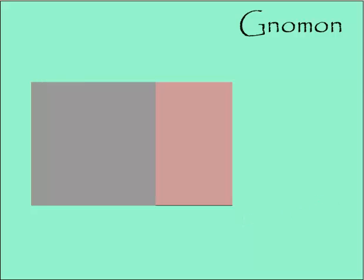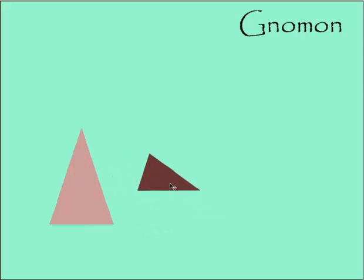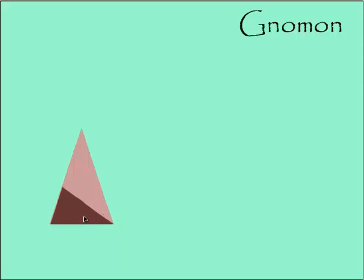So golden rectangles are the only ones that have a square that is gnomon to them. This is an equilateral triangle, and this is another equilateral triangle, and these two equilateral triangles are similar. I've tipped one on its side, and if I fit it in here, you can see that the gnomon — the leftover pink here — is another equilateral triangle. These two equilateral triangles are called the golden triangles.